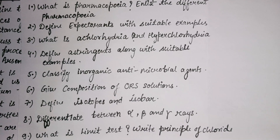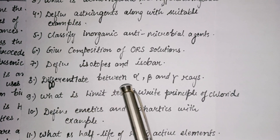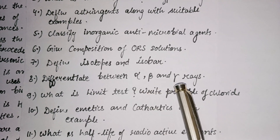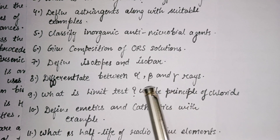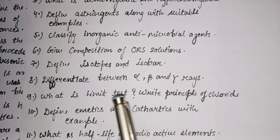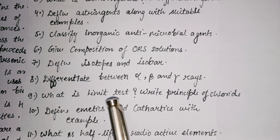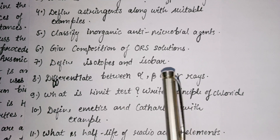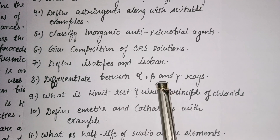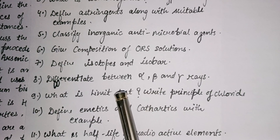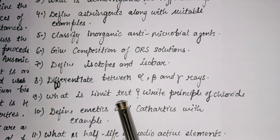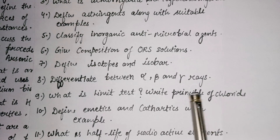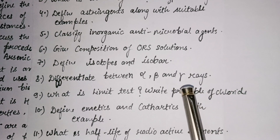The seventh question: define isotopes and isobars — explain what isotopes and isobars are. The eighth question: differentiate between alpha, beta, and gamma rays — define each and explain the differences between all three. The ninth question: what is a limit test? Define what a limit test is and why we conduct limit tests for sodium, chloride, iron, arsenic, and heavy metals, and write the principle of the chloride limit test.